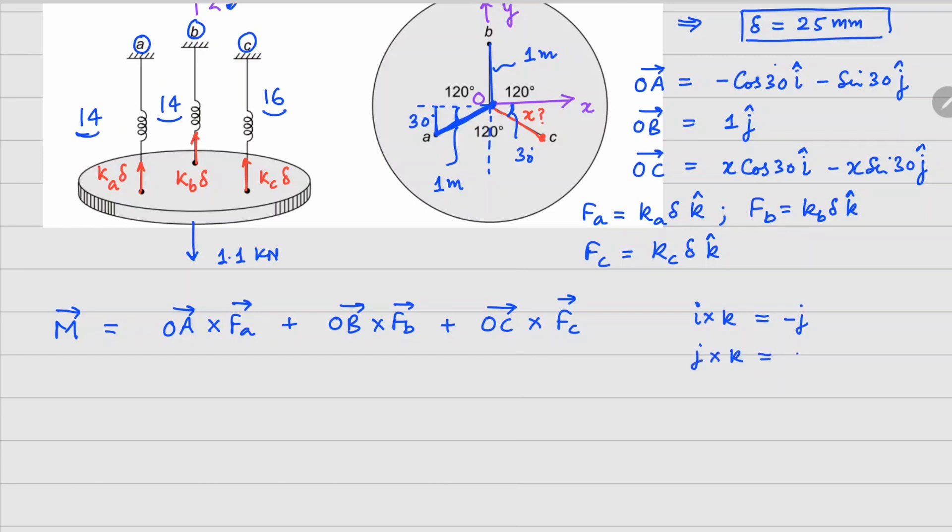Okay, so now let's do this. The first one we are doing is this one with this right here, so we are going to get minus cos 30, and since there's a minus sign already there, so this becomes plus j cap, and then minus sin 30 i cap. This whole thing will be multiplied by this force, which is ka times delta. That's coming from the first term.